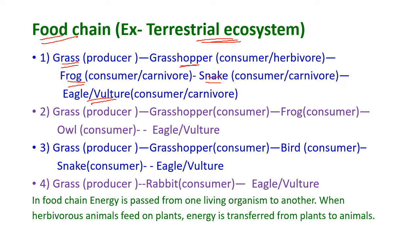Grass is the producer — grass produces food and the grasshopper consumes the grass. Hence, the grasshopper is called a consumer, and since it eats plants, it is also known as a herbivore. All animals that eat plants are known as herbivores. The frog eats the grasshopper, so the frog is also a consumer.